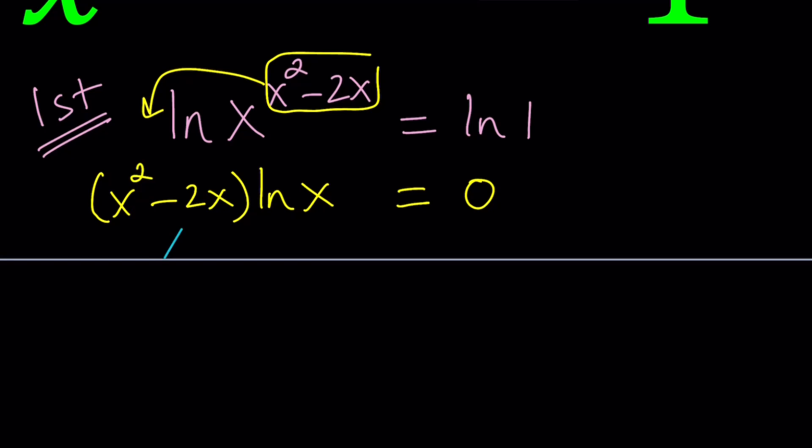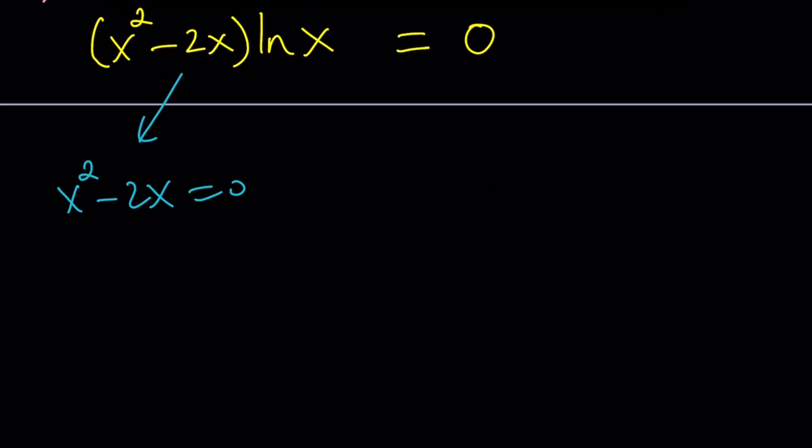Now, we can look at each factor. For example, x squared minus 2x equals 0 gives us the following. You can factor it. And from here, we get x equals 0 and x equals 2. Let's take a look at this.